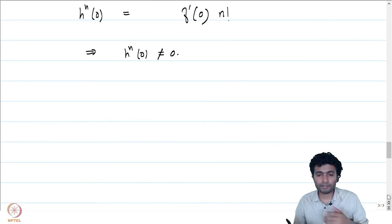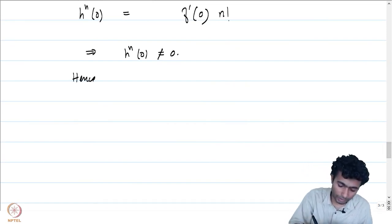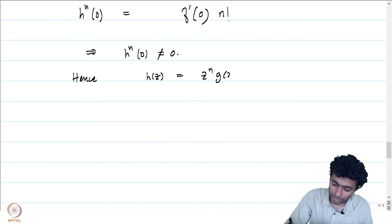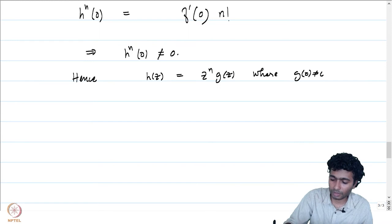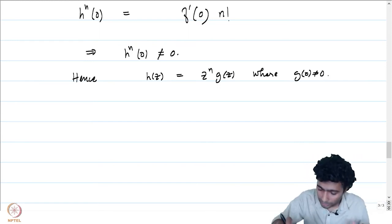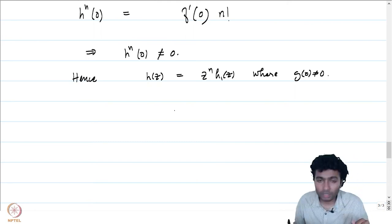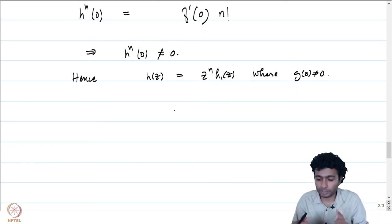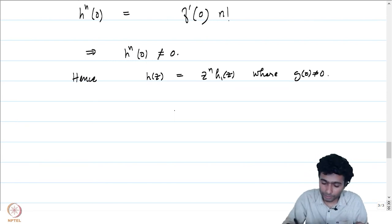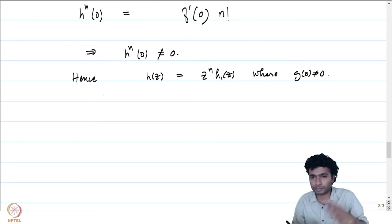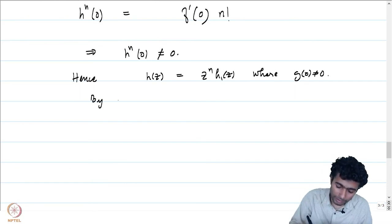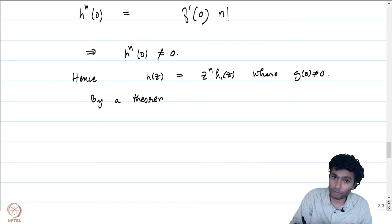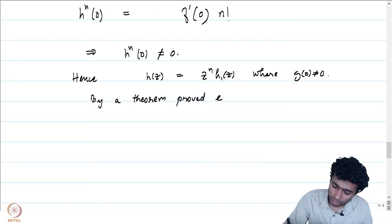Looking at the power series expansion of h around 0, we can write h(z) = z^n · h₁(z) where h₁ does not vanish. We now invoke our theorem on the local behavior of a holomorphic function: since h(0) = 0 with multiplicity n, by that earlier theorem we have h(z) − h(0) = g(z)^n for some holomorphic function g in a neighborhood of 0.